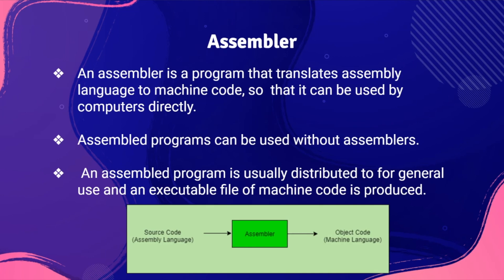Finally, we have the assembler. The assembler is a program that translates assembly language into machine code so that it can be used by computers directly. Assembled programs can be used without the assembler, are usually distributed for general use, and an executable file of machine code is produced.